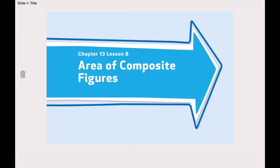Before we start, we have a new vocabulary word: composite figure. What is a composite figure? A composite figure is made up of two or more figures. So it's one shape, but it's not only a rectangle — it has more than two figures.